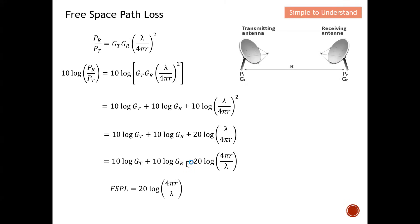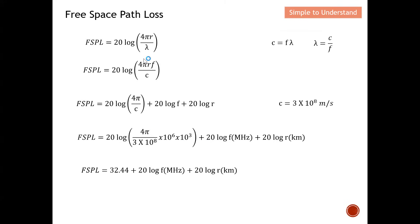Next, since this involves wavelength, I know that c equals f times lambda, so wavelength lambda equals c over f. When I substitute this into the equation, the frequency f moves to the top. Simplifying further, the equation becomes: 20 log of 4 pi over c, plus 20 log f, plus 20 log r, where f is the frequency and r is the distance between the transmitter and receiver.